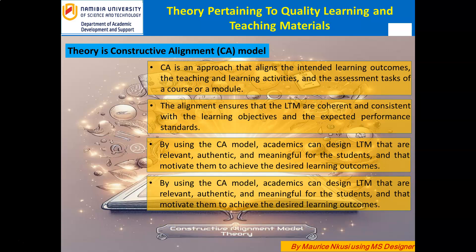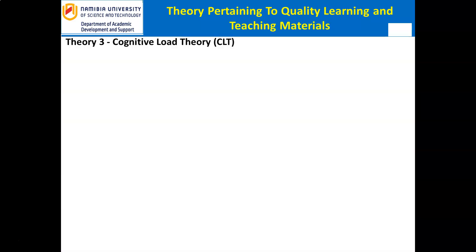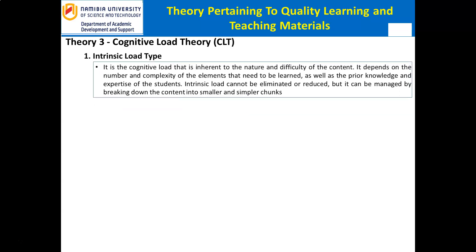The third theory is the Cognitive Load Theory, CLT. CLT is a theory that explains how students process and retain information in their working memory and long-term memory. CLT suggests that LTM should be designed to optimize the cognitive load of students, which consists of three types: 1. Intrinsic — related to the complexity and difficulty of the content; 2. Extraneous — related to the presentation and organization of the content; and 3. Germane — related to the processing and integration of the content.